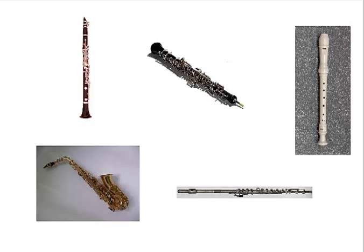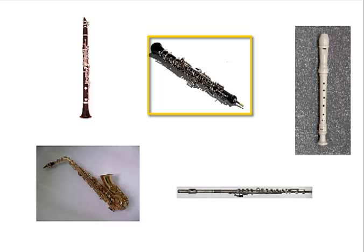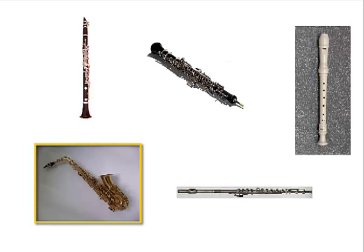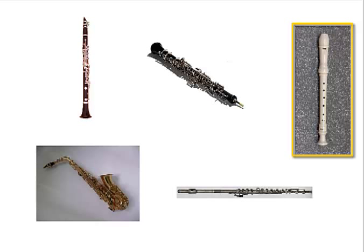The next class of instruments are called woodwinds. If you participated in our previous course, Build Your Own Sound Amplifier, you actually made a simple woodwind instrument when you made the straw and the glass of water. Typical woodwind instruments include clarinets, oboes, saxophones, and flutes. And you may be familiar with the recorder, a common, cheap instrument that is often used in music classes.